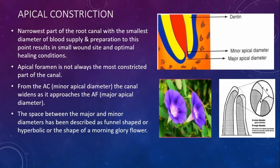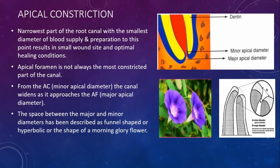The apical constriction is the narrowest part of the root canal with the smallest diameter of blood supply. Preparation to this point results in a small wound site and optimal healing conditions. The apical foramen is not always the most constricted part of the root canal — from the apical constriction, the canal widens as it approaches the apical foramen. This shape can be compared to a funnel, hyperbolic shape, or the shape of the morning glory flower.